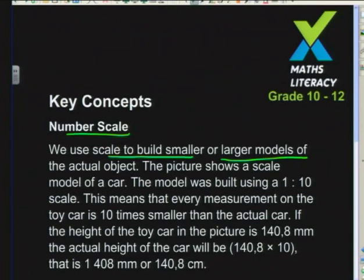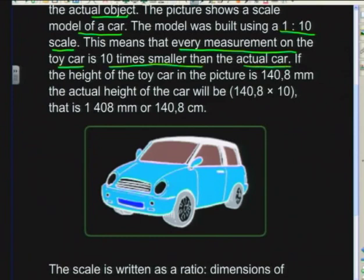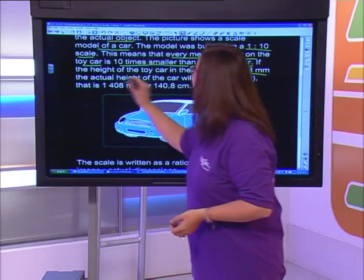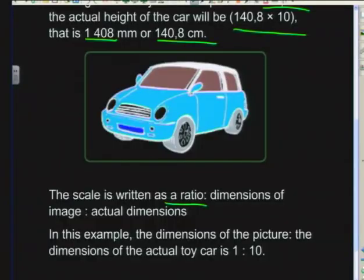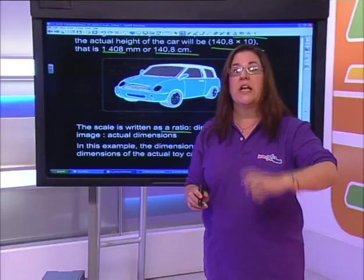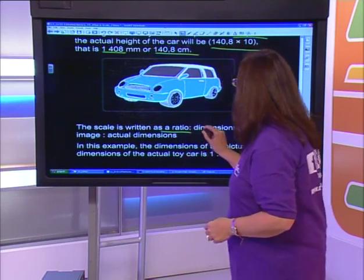We do this with number scales - we use a scale to build smaller or larger models of the actual object. This picture shows a model of a car built using a 1 to 10 scale. This means every measurement on the toy car is 10 times smaller than the actual car. If the height of the toy car is 140.8 millimeters, the actual height will be 140.8 times 10, which is 1408 millimeters or 140 centimeters.